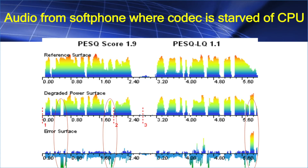Here's a quick example of audio coming from a soft phone where the codec is starved of PC CPU computing power. Now we're going to play you an example of a G.729 file from one end, where the other end is a variant called G.729b. These two are not interoperable, and so this is the net effect you'll hear in the audio.